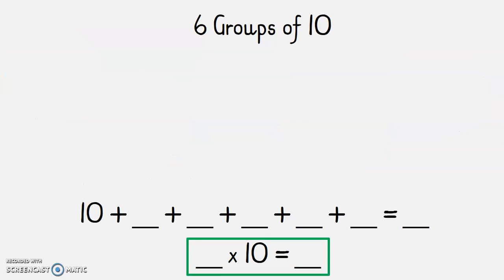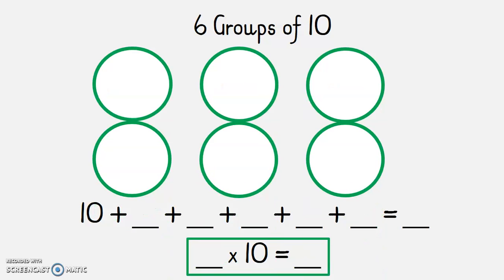My last one we're going to do is 6 groups of 10. Draw 6 groups, pause the video. Now put 10 stars in each group, do the repeated addition at the bottom — 10 plus 10 plus 10 plus 10 — then write how many groups times 10 equals your answer. How many groups did we use? Yes — 6 times 10, 6 groups.